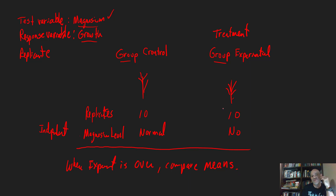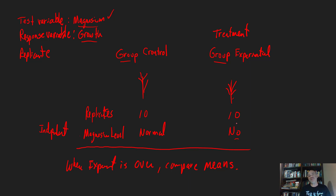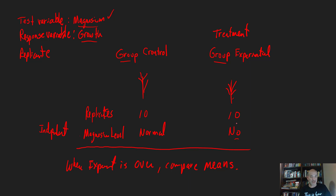You're expecting that with no magnesium you'll see lower growth. But remember, the null hypothesis — discussed in the prior video — assumes no difference. So when comparing the means, we test the null hypothesis that the means are not different; the alternate hypothesis is that they are different. Based on the example, the more specific alternate expectation is that the group without magnesium would grow less.